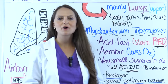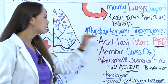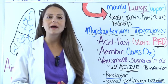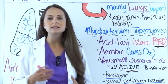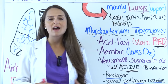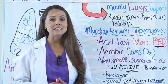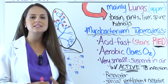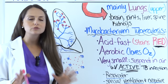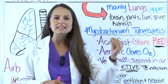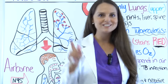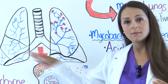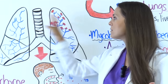Mycobacterium tuberculosis is an acid-fast bacteria. When you collect sputum from a patient being tested for tuberculosis, you send it to the lab where they do a special acid-fast staining procedure — if it is mycobacterium tuberculosis, it will stain a bright red color. In addition, this bacteria is aerobic, meaning it absolutely loves oxygen, which is why it resides in the upper lobes (the apex) where oxygen levels are highest.